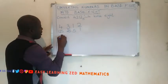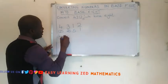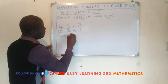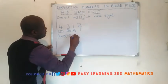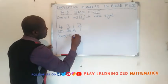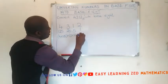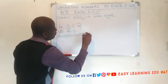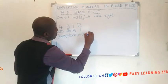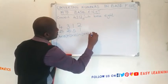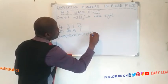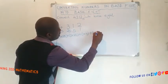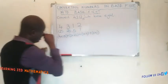So we say: 4 times 125, plus 3 times 25, plus 1 times 5, plus 2 times 1. This is the rule we follow when converting numbers from different bases into base 10.